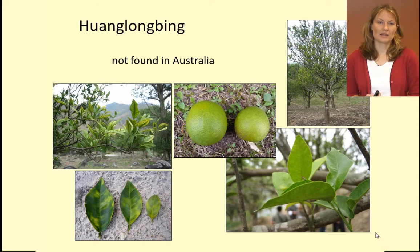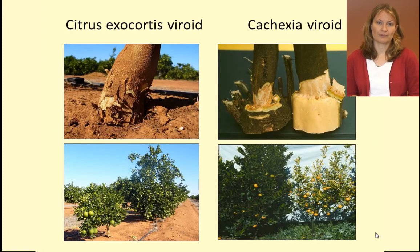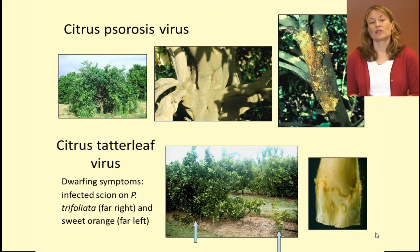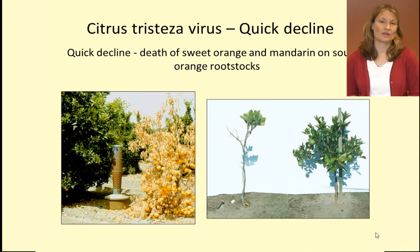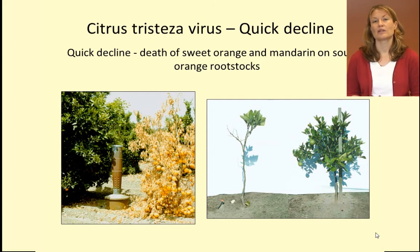Examples of graft transmissible diseases include Huanglongbing, which is not found in Australia but is found in Pakistan and leads to severe tree decline, eventual death, and affects fruit quality and yield. The citrus exocortis viroid and citrus cachexia viroid cause tree stunting. Citrus tatter leaf virus also causes tree stunting. Citrus cirrhosis virus can affect yield, and citrus tristeza virus — or CTV — has hundreds of strains that cause many different diseases in different citrus types. One example is quick decline, which leads to death of sweet orange and mandarin on sour orange rootstocks.